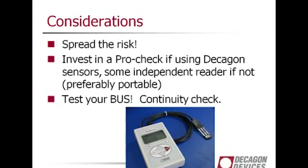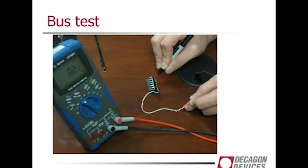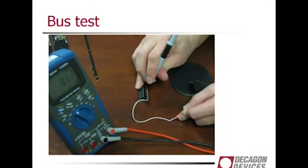Also test your bus. One way to do that is a continuity check — any multimeter can do it. Set it to resistance. What you're looking for is a high resistance or somewhere you're not getting good contact between the sensor port and your line. Go through and check each individual port to make sure they're getting good continuity with the full data line. Remember that a problem in one of these ports could be a problem for all of them.